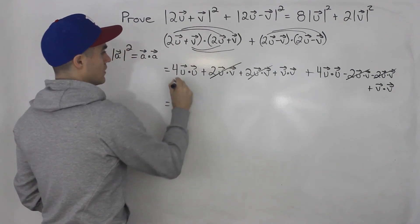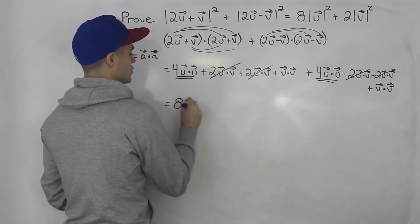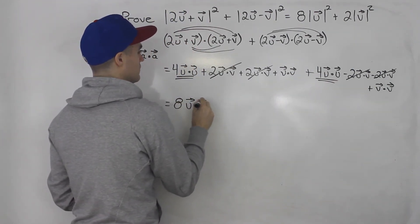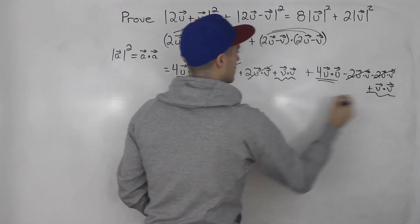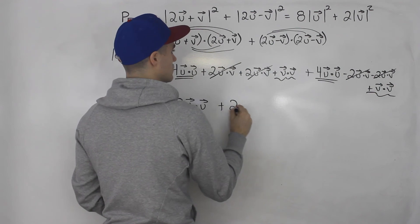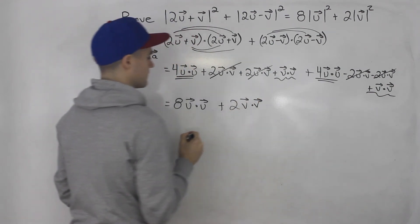So notice that this and this are like terms. So we have 8u dot vector u. And then this and this here, we have 2v dot vector v.